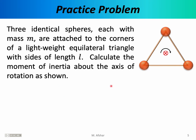Let's do another practice problem with moment of inertia. Three identical spheres, each with mass m, are attached to the corners of a lightweight equilateral triangle with sides of length L. Calculate the moment of inertia about the axis of rotation as shown. This object is exactly the same as in the previous problem. What's different is the axis of rotation — it is no longer a vertical line, but a line going into the page, perpendicular to the plane of the page, and we're imagining the three points rotating around that axis.